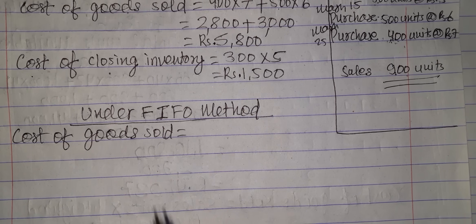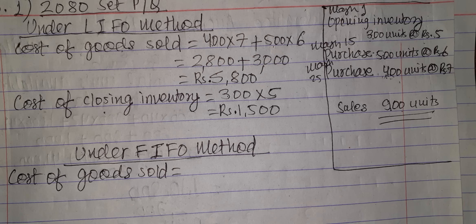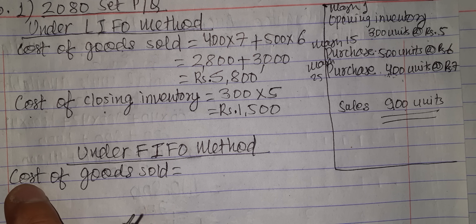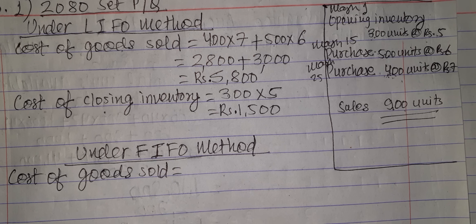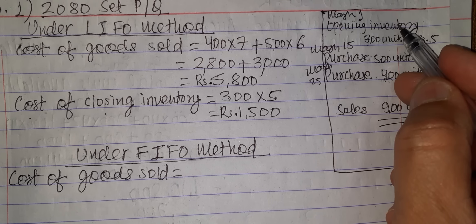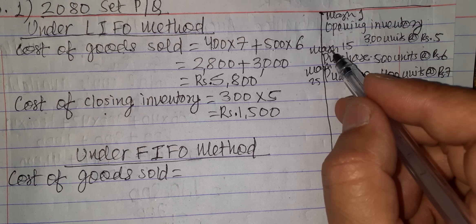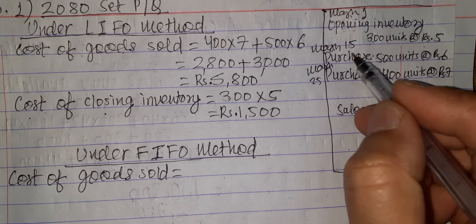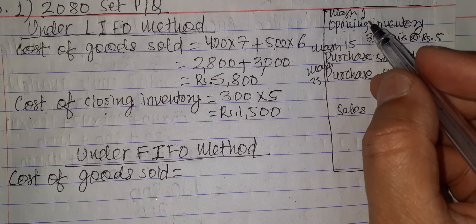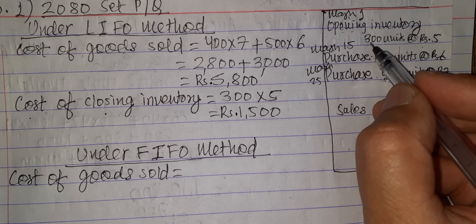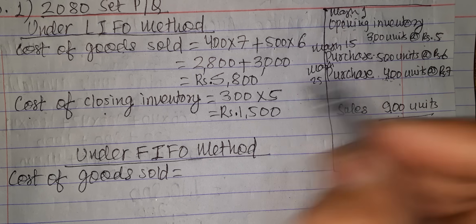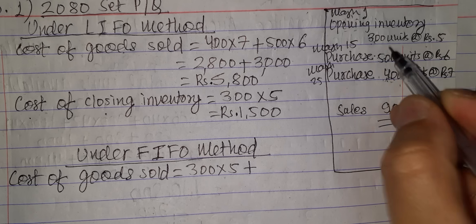Under the FIFO method, how do we calculate cost of goods sold? First in, first out means the opening inventory goes out first. The opening inventory comes before the purchases of March 1, March 15, and March 25. The first goods to go out are from opening inventory: 300 units. Total units to be sold are 900.